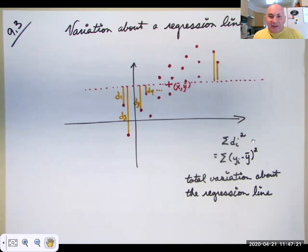And if you take each of those deviations, that's the y coordinate minus y bar, and you square those, and you add them all up for every data point, that gives you a measure of the total variation about the regression line.